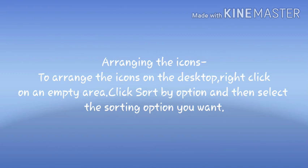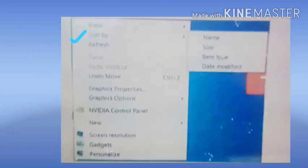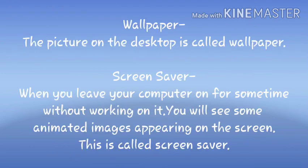Arranging icons: to arrange the icons on the desktop, right-click on an empty area, click the 'Sort by' option, and then select the sorting option you want. The picture on the desktop is called the wallpaper.